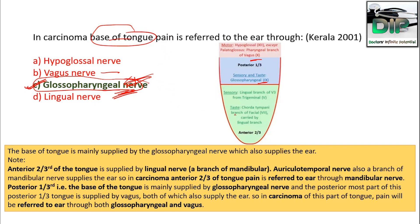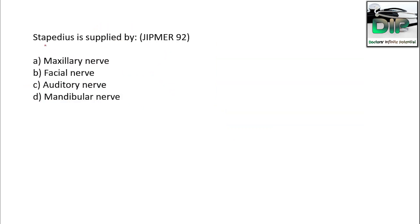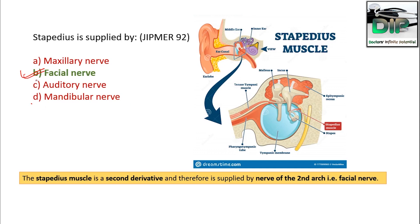The stapedius muscle is supplied by — maxillary, facial, auditory, or mandibular nerve? The correct answer is facial. The stapedius is a derivative of the second branchial arch, supplied by the second arch nerve — the facial nerve.